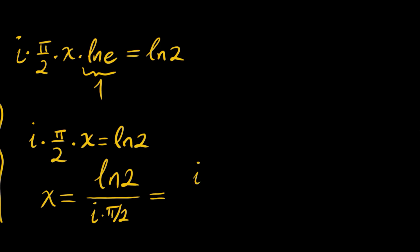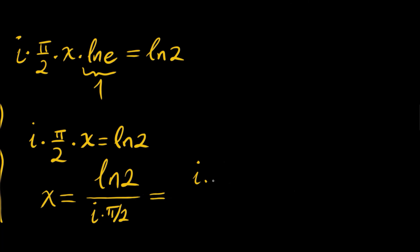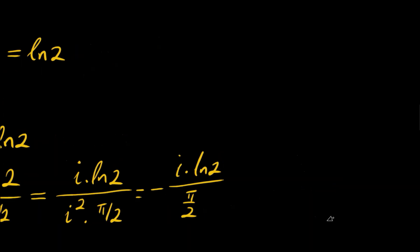We will have i times ln 2 divided by i squared times pi over 2, which is negative i times ln 2 divided by pi over 2. Or we can just have this 2 in the numerator: negative 2i times ln 2 divided by pi is our final result for this problem.